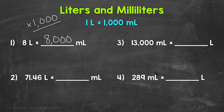Let's move on to number two, where we have 71 and 46 hundredths, or 71.46 liters, equals how many milliliters. This number is not as easy to work with as the 8 liters in number one. We were able to use mental math for number one, but for number two we still need to multiply by 1,000, because we're going from liters to milliliters.